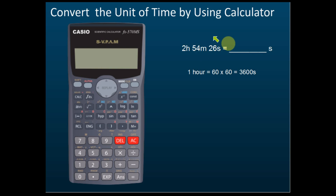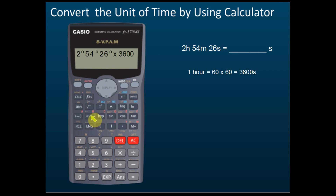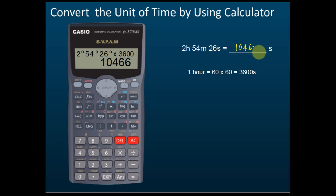Now, if they give you hours and want you to convert to seconds — for example, 2 hours, 54 minutes, 26 seconds — remember that 1 hour equals 3600 seconds. Key in 2 degrees, 54 minutes, 26 seconds, then multiply by 3600. Press equal and the calculator will show 10466 seconds.